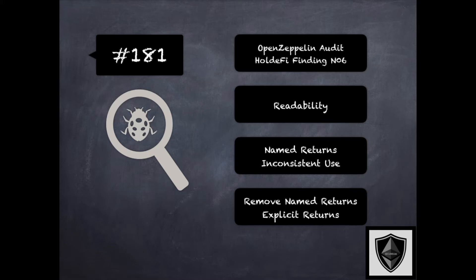This is related to function return values in 142, explicit over implicit in 164, and clarity issues in 188 of the security pitfalls and best practices 201 module.